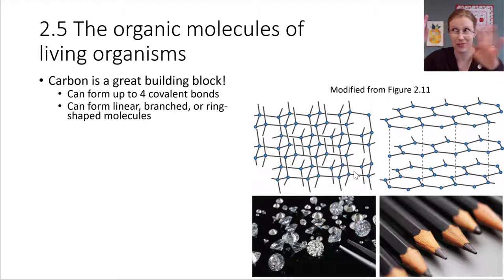So four covalent bonds out in every direction. This is a very strong structure. Diamond is extremely hard because of this structure that the atoms have networked with each other.